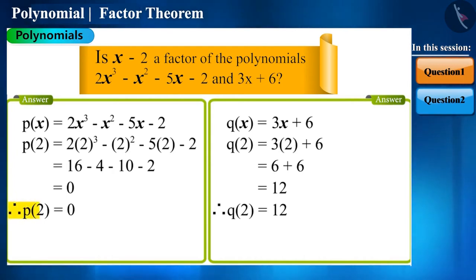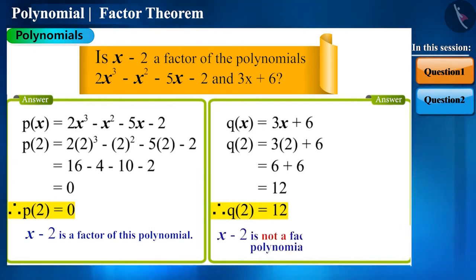And now we get p of 2 is equal to 0 and q of 2 is equal to 12. Now according to the factor theorem, we can say that x-2 is a factor of the first polynomial, but not a factor of the second polynomial.